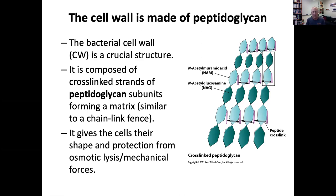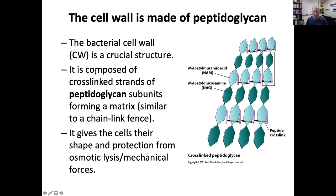Peptidoglycan is the name of the molecule that's the basis of the bacterial cell wall. We're going to look at it as a linear structure, but really it is chains of peptidoglycan. They're cross-linked and surround the bacterial cell like a meshwork. Cross-linked strands of peptidoglycan form a matrix.